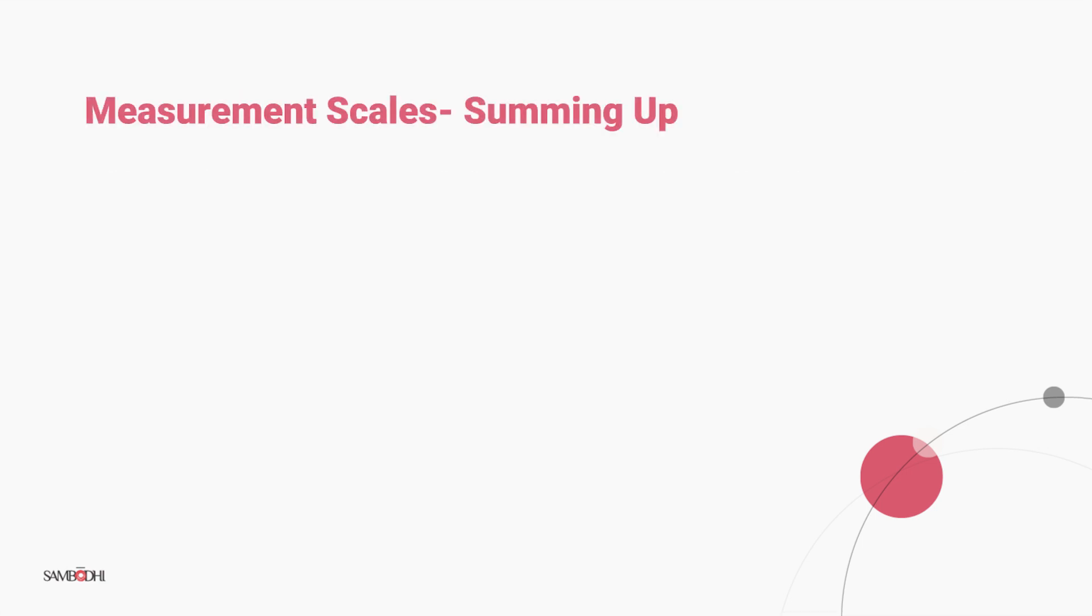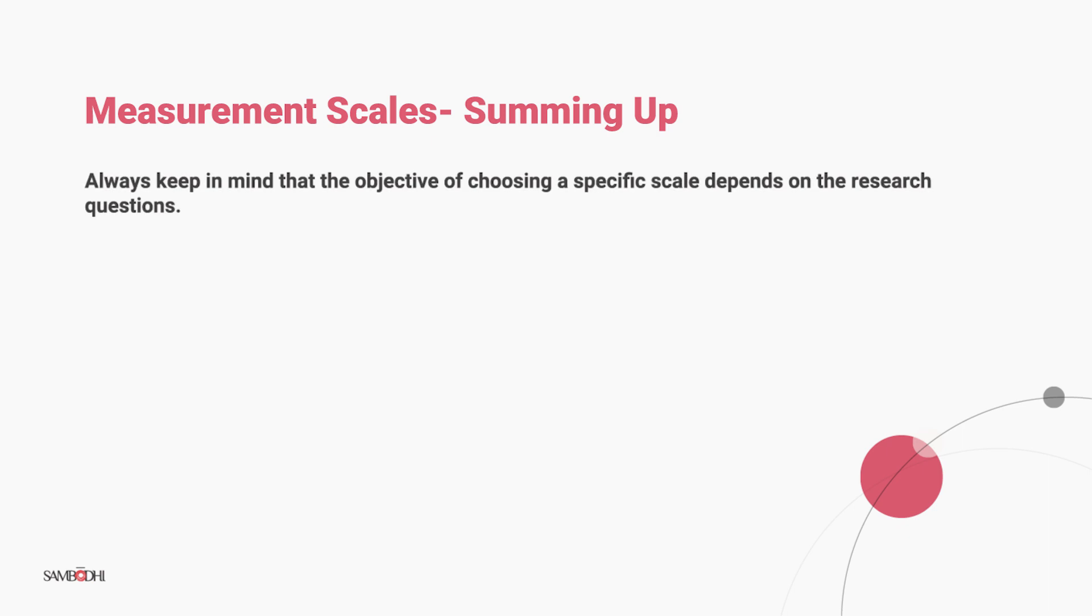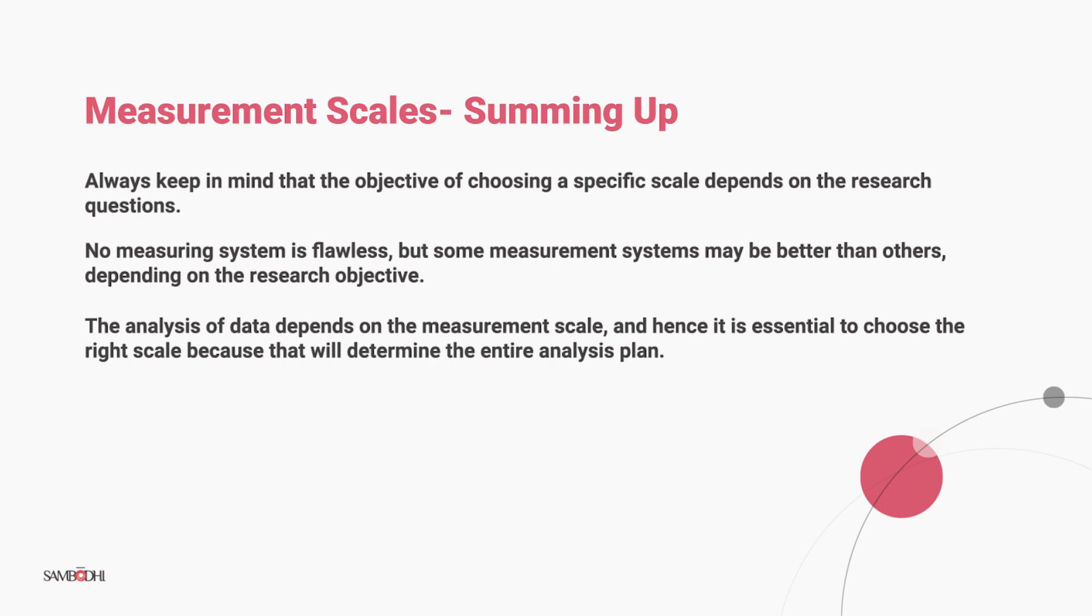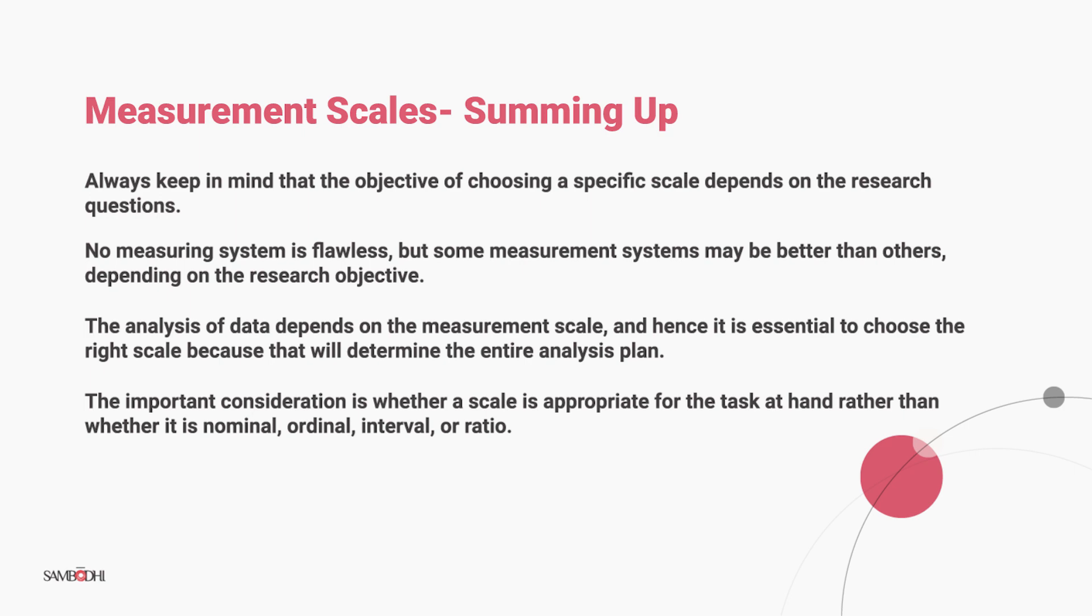There are certain things to keep in mind when studying measurement scales. Always remember that the objective of choosing a specific scale depends on the research questions. No measuring system is flawless, but some may be better than the others depending entirely on the research objective. Data analysis depends on the measurement scale, which is why it is very important to choose the right scale. And finally, the important consideration is whether a scale is appropriate for the task at hand rather than whether it is nominal, ordinal, interval, or ratio.